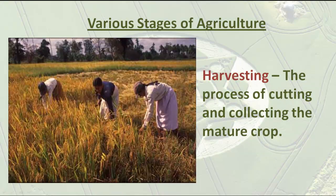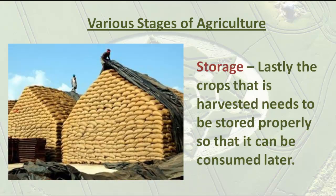Fencing is also done to keep grazing animals like cows and goats away from fields. After that, harvesting is done, which is the process of cutting and collecting the mature crop. Lastly, the crops that are harvested need to be stored properly so that they can be consumed later.